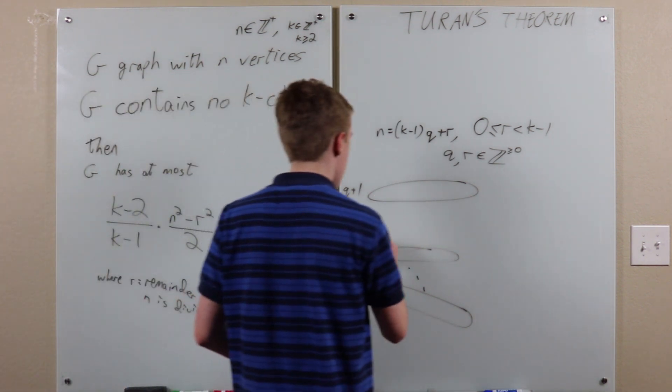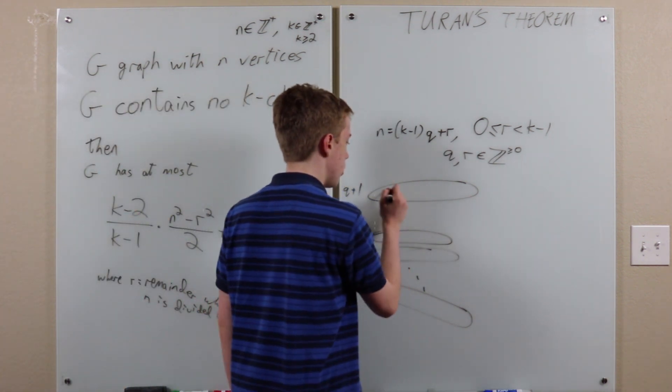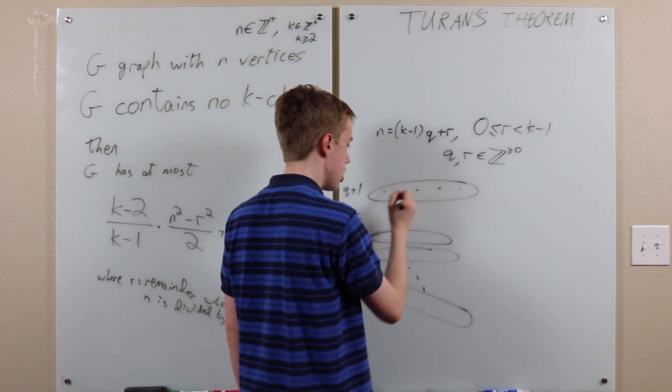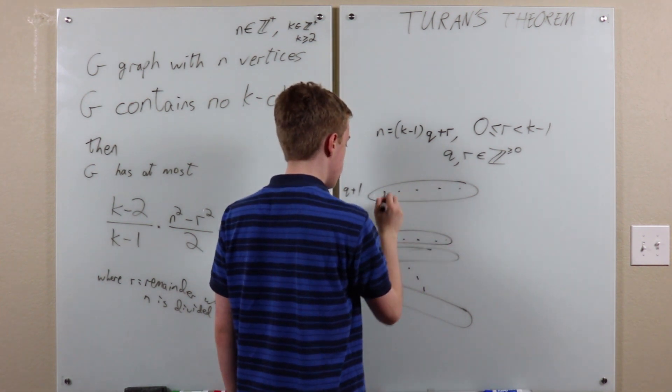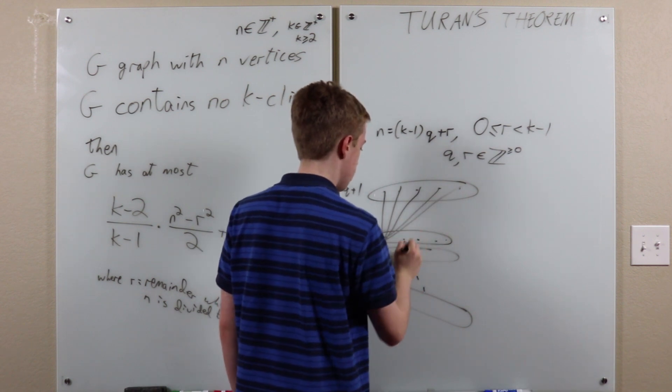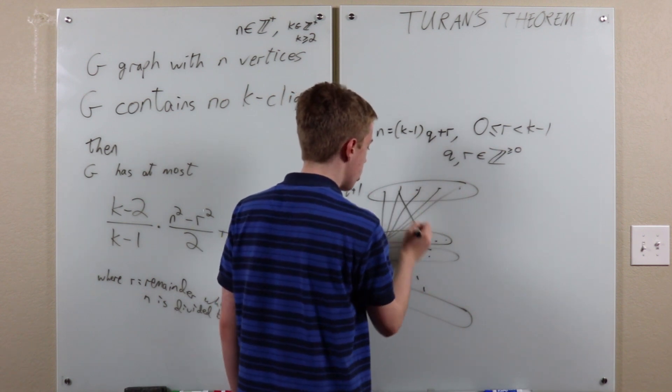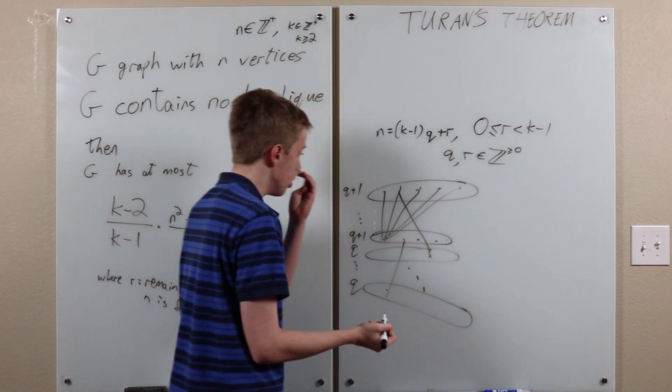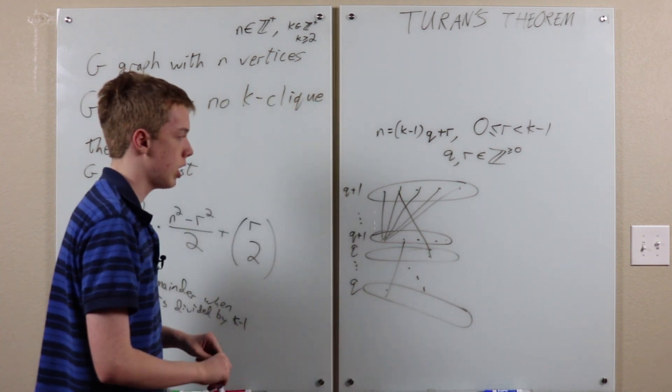And then we connect two vertices with an edge if and only if they're not in the same group. So no edges in here, but all these edges are drawn. Any two that are not in the same group are connected by an edge, but no two in the same group are connected by an edge.